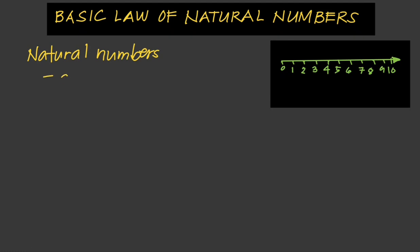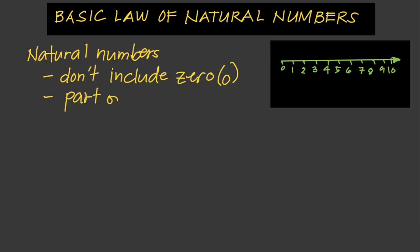Natural numbers don't include zero. And natural numbers are part of real numbers. We count from 1, 2, and so on until infinity. So natural numbers don't include negative numbers or zero.